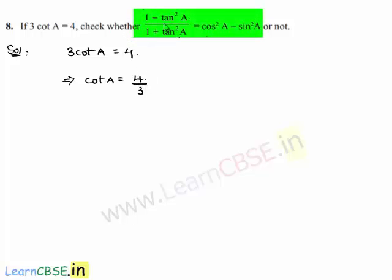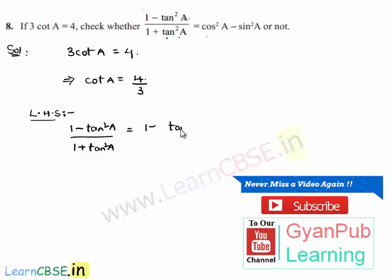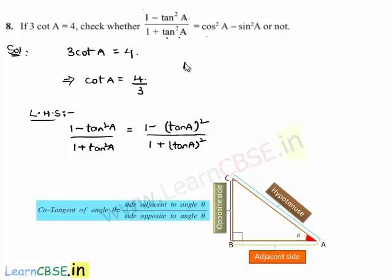We are asked to check whether (1 minus tan square a) by (1 plus tan square a) is equal to cos square a minus sin square a. Let us consider the left-hand side. Since the value of cot a is given, we know tan a is the reciprocal of cot a, so tan a equals 1 by cot a, which is the reciprocal of 4 by 3, that is 3 by 4.